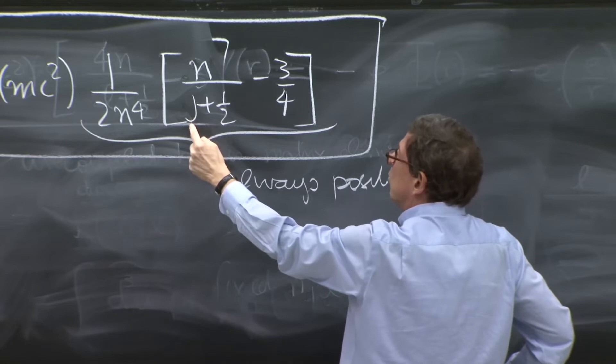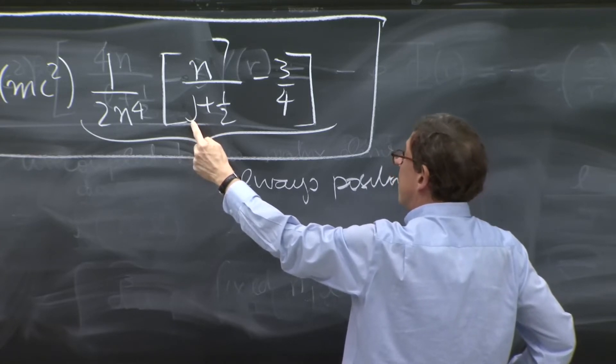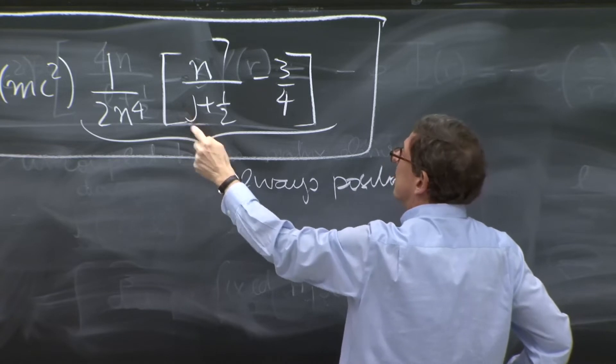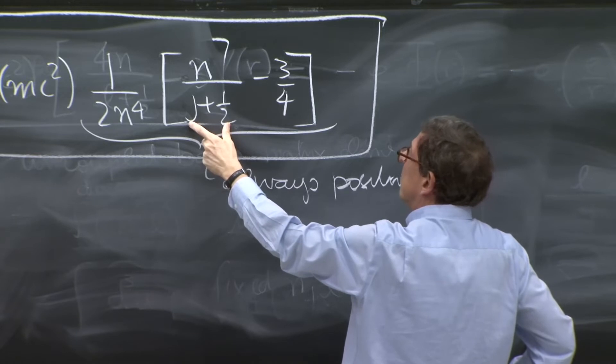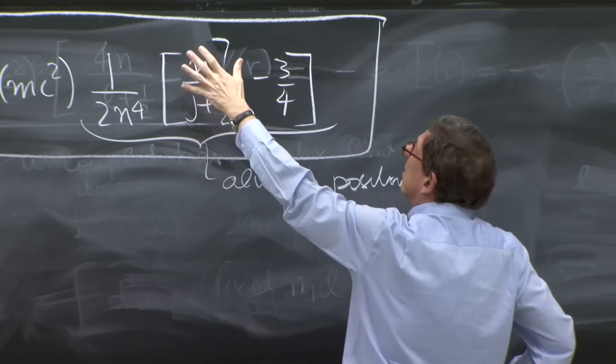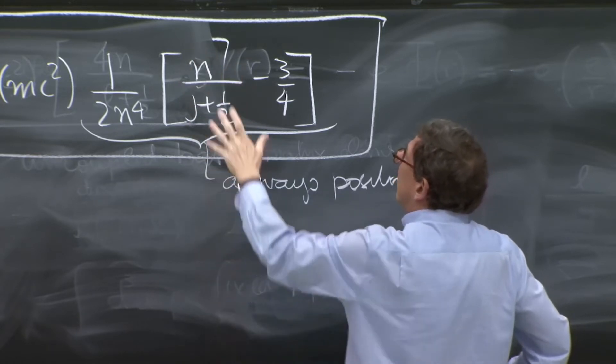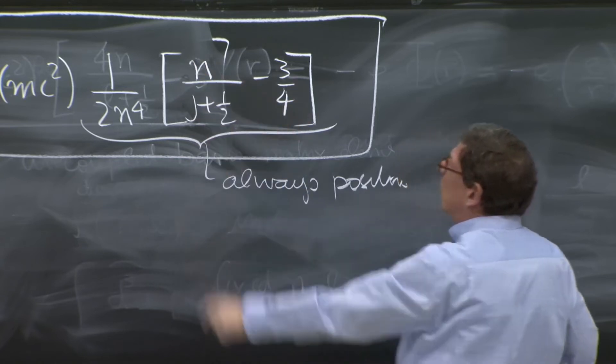The minimum value of this ratio is when j is maximum. The maximum j is when j is l plus 1 half with the maximum l. So this is l plus 1 maximum. But l plus 1 maximum is, in fact, n. So the minimum value of this is 1. So it is always positive.